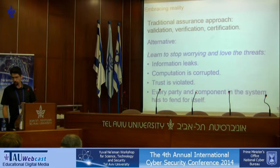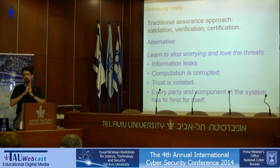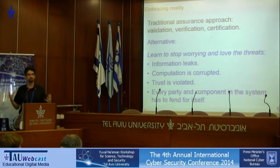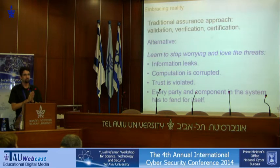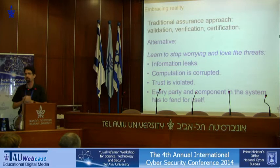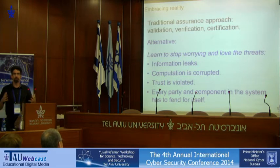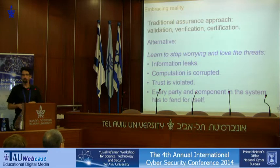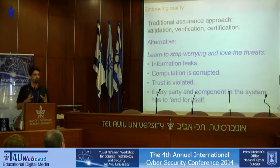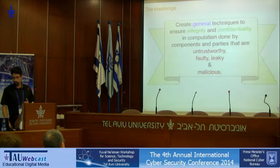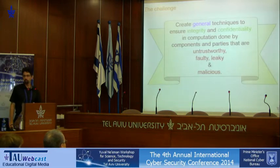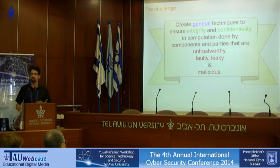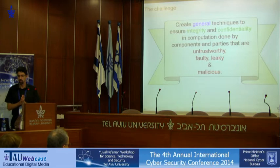I would like to advocate that there is an alternative: we should just accept what I've just shown as the reality. This is inevitable — information will leak, computation will be corrupted, any trust we place in the platform will be violated. What we have to do is build our systems in a paranoid way, where every component assumes that anything around it is corrupted and just has to fend for itself. How can we build such systems in a way that ensures integrity and confidentiality when the components and parties around us cannot be trusted?